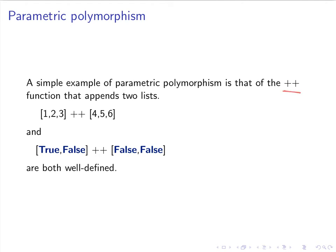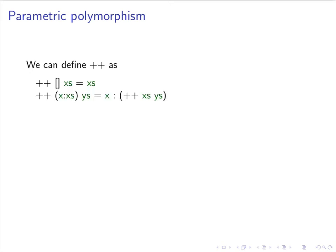If we look at appending the list [1, 2, 3] to the list [4, 5, 6], that's really not substantially different from appending the list [True, False] to the list [False, False]. They're both well defined. If we look at the definition of the append function, we could define it by two clauses: the first says that if we append the empty list to some list, that's just the latter list. If we append a list with head x and tail xs to another list ys, then we cons x onto the result of appending xs to ys. This definition of append is completely independent of the actual element type of lists.